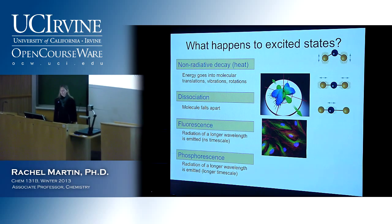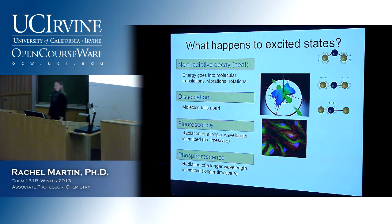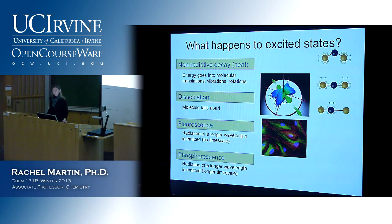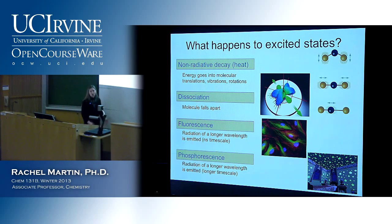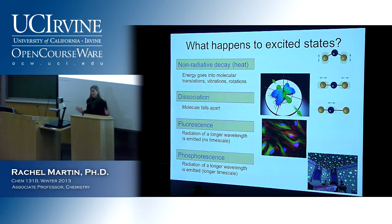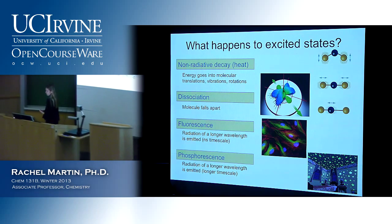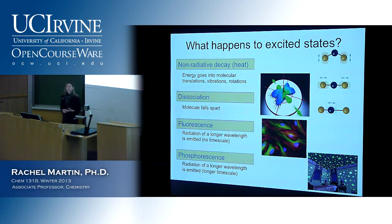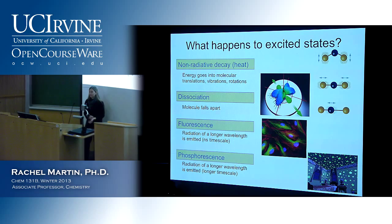There's also phosphorescence: radiation of a longer wavelength emitted after an electronic state is excited, but it takes longer. Things like glow-in-the-dark stars — you expose them to light, they absorb, and then over time they emit light. Glow-in-the-dark stars work by phosphorescence, but not glow sticks — that's chemiluminescence. That gives a general idea of what happens to energy after stuff gets excited.